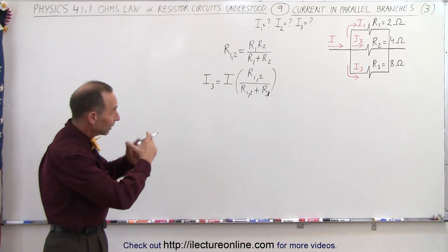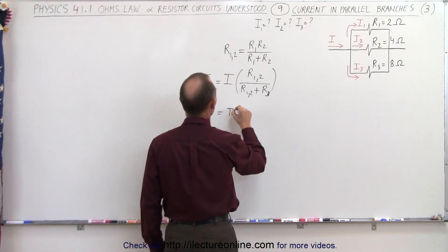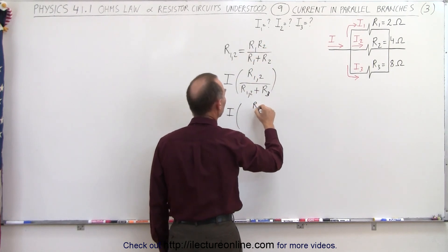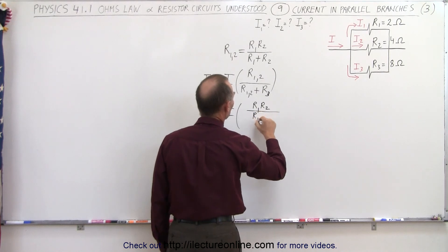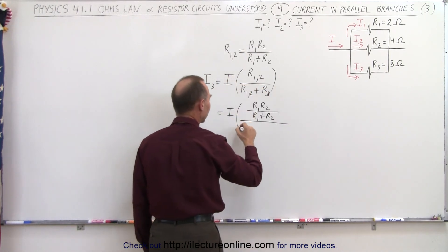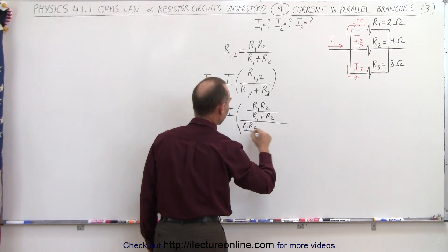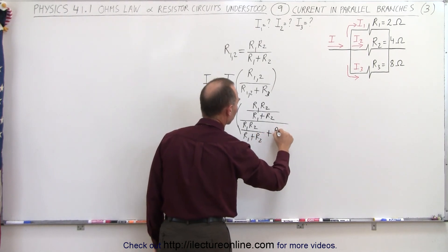Let's expand R12 and see what that looks like. This becomes equal to I times, in the numerator we get R1 R2 divided by R1 plus R2. And in the denominator, we get the same thing: R1 R2 divided by R1 plus R2, and then we add R3 to that.